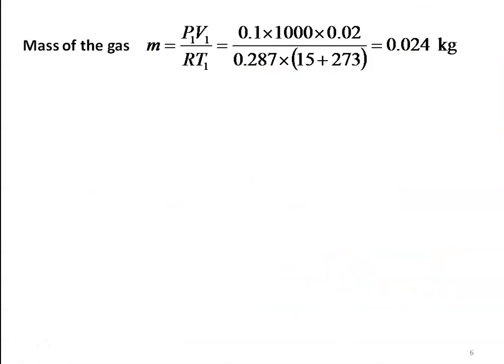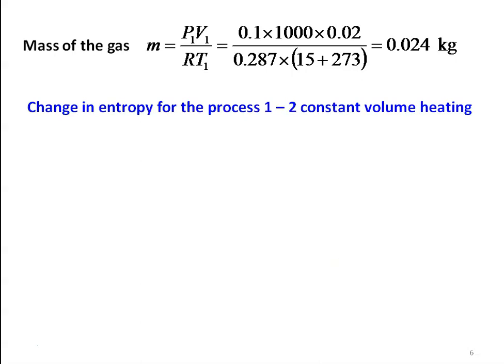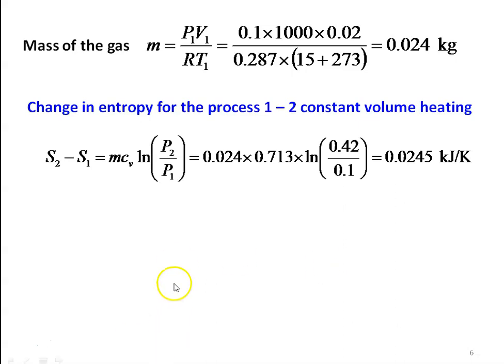The mass of gas M = P1V1 / RT1 = (0.1 × 1000 × 0.02) / (0.287 × 288) = 0.024 kg. The change in entropy for the constant volume heating process 1–2: S2 − S1 = M·Cv·ln(P2/P1) = 0.024 × 0.713 × ln(0.42/0.1) = 0.0245 kJ/K.